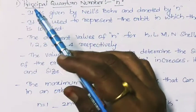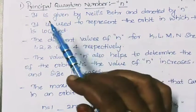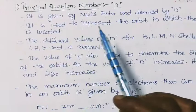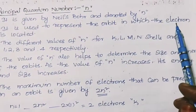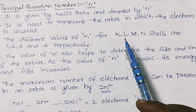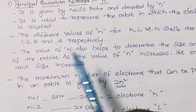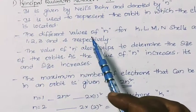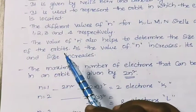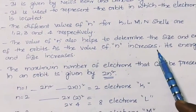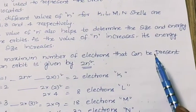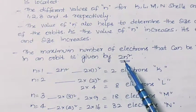The first quantum number is the principal quantum number. It is given by Niels Bohr and denoted by small n. It is used to represent the orbit in which the electron is located. The different values of n for K, L, M, N shells are 1, 2, 3, and 4 respectively. The value of n also helps to determine the size and energy of the orbits — as the value of n increases, its energy and size increase. The maximum number of electrons that can be present in an orbit is given by 2n².